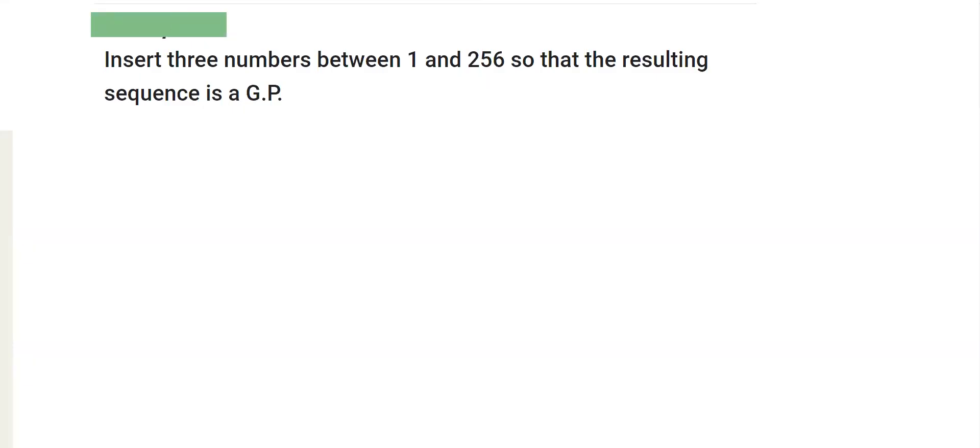This is example number 12. It says that insert three numbers between 1 and 256 so that the resulting sequence is a GP.